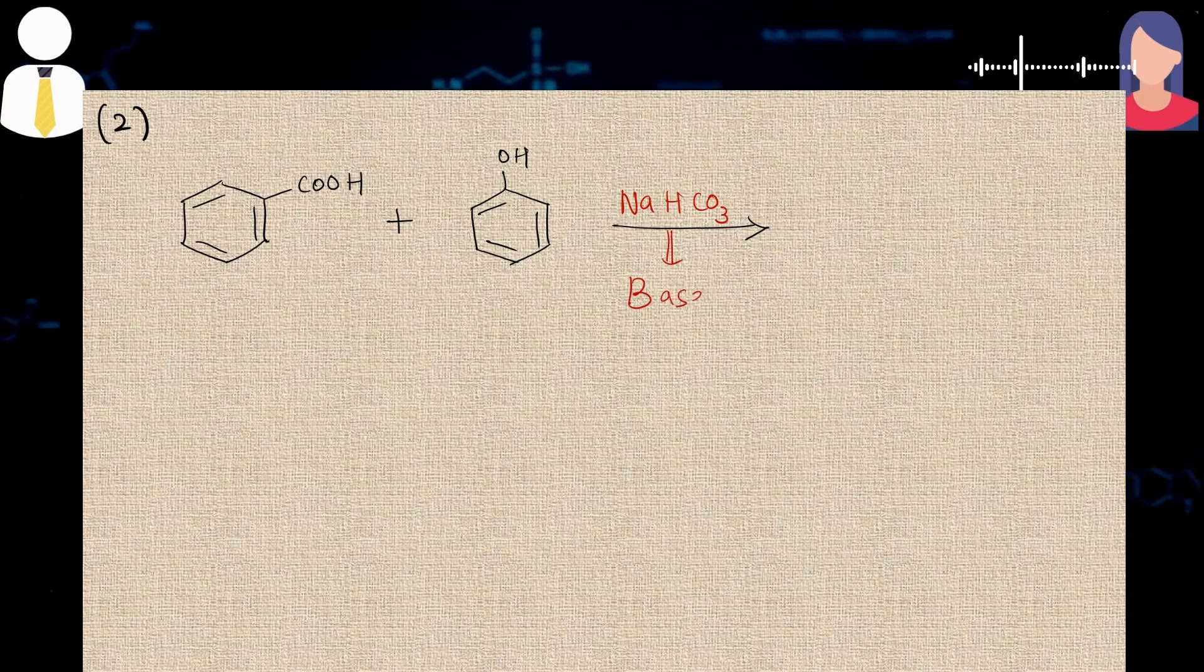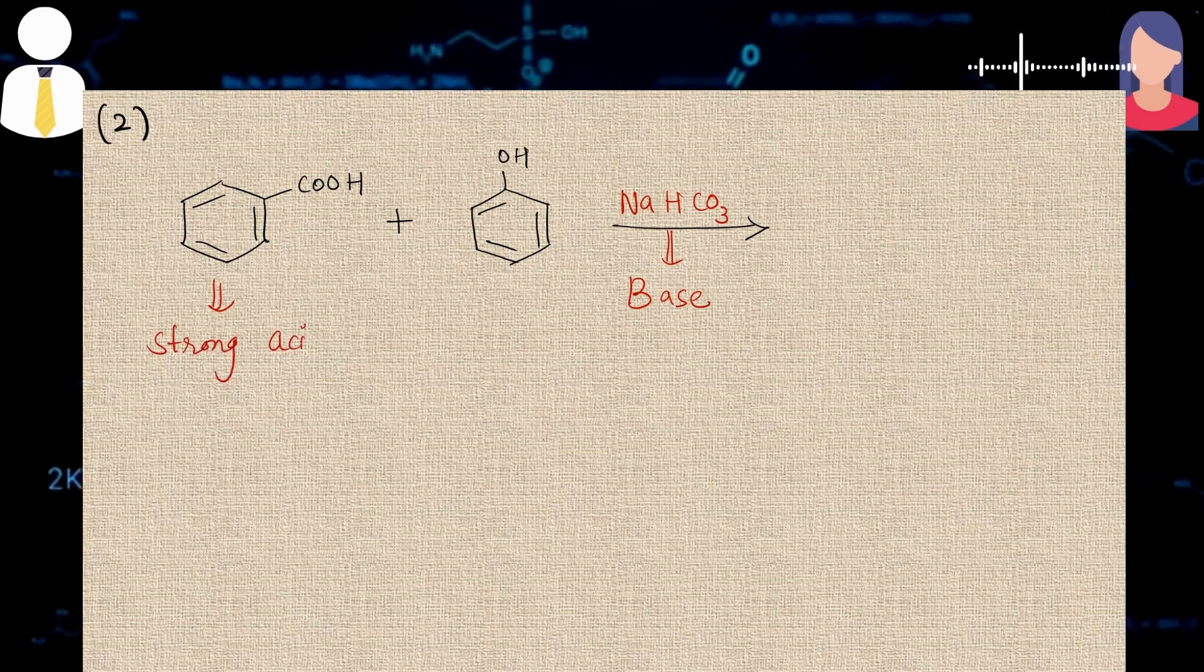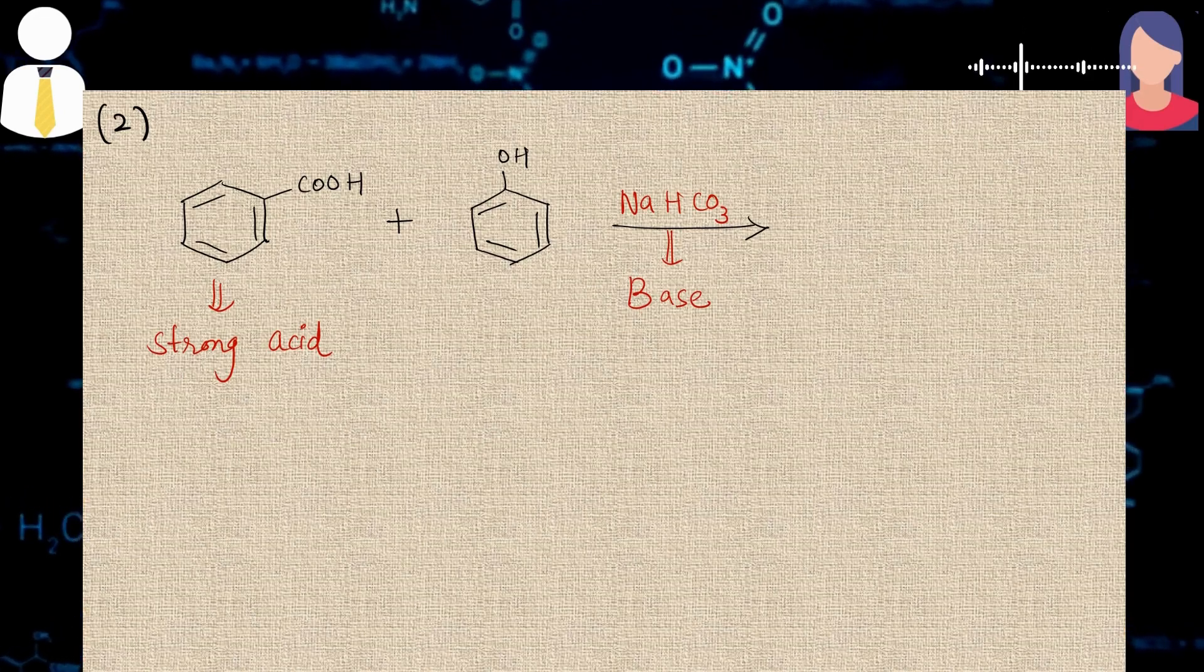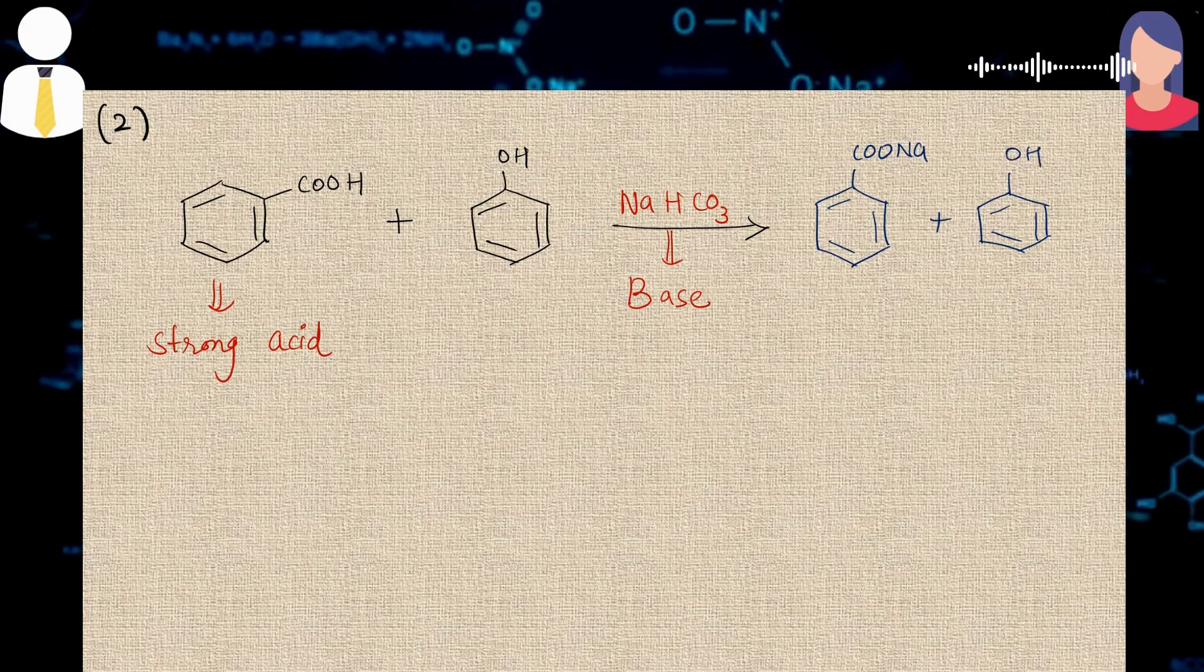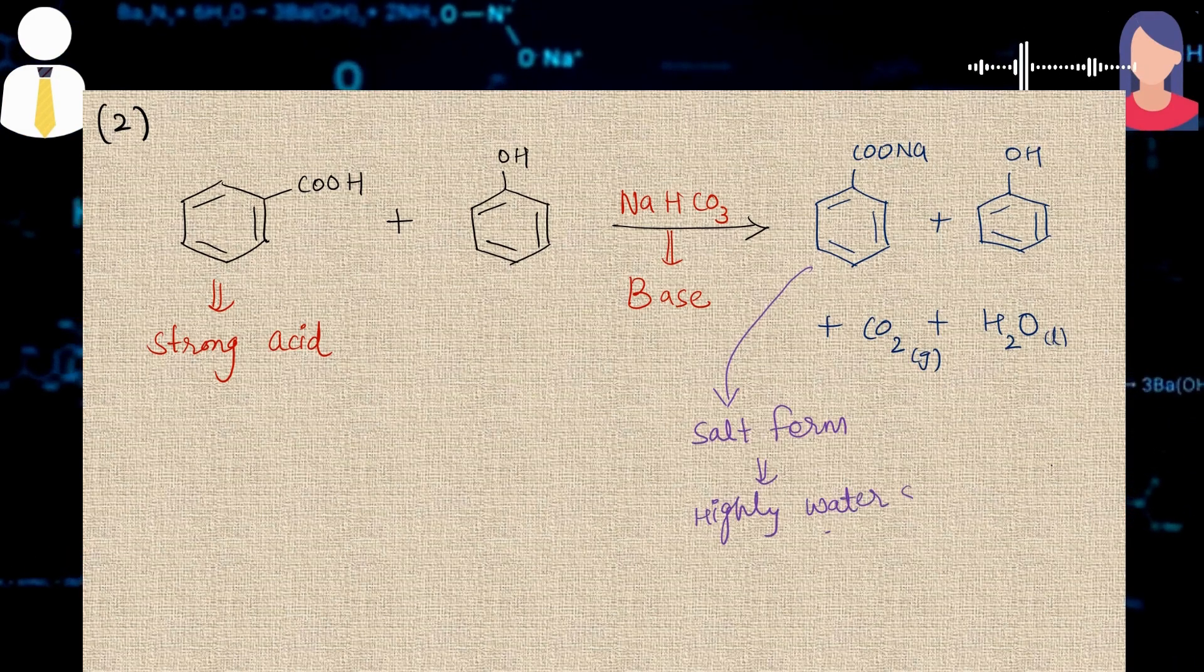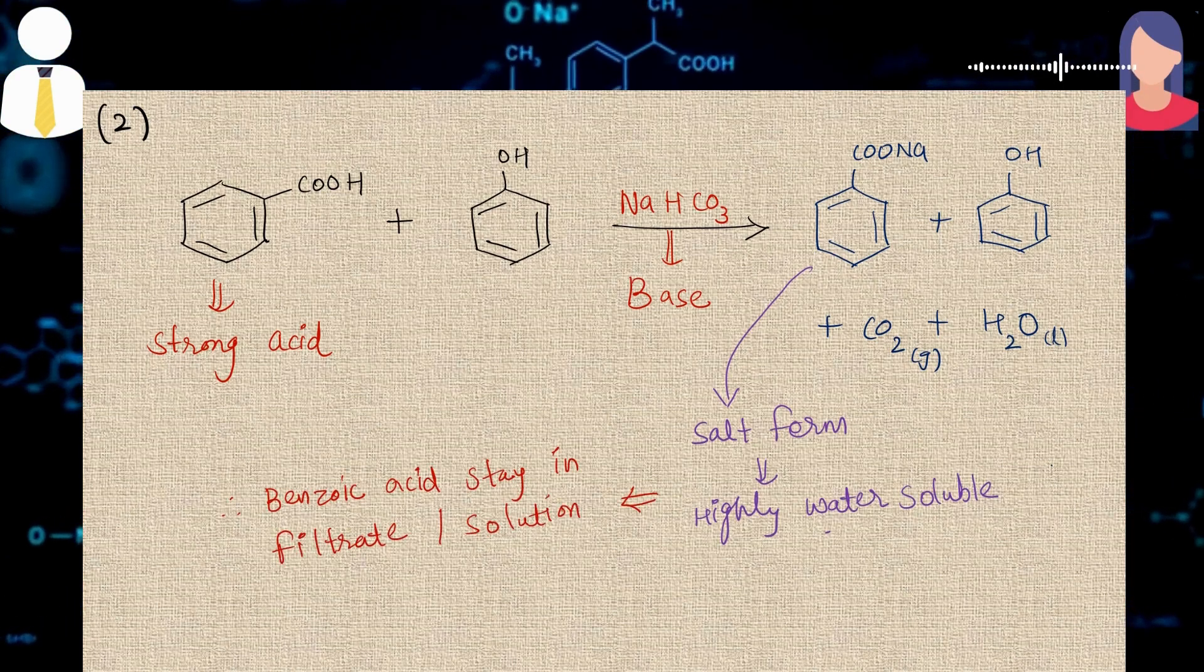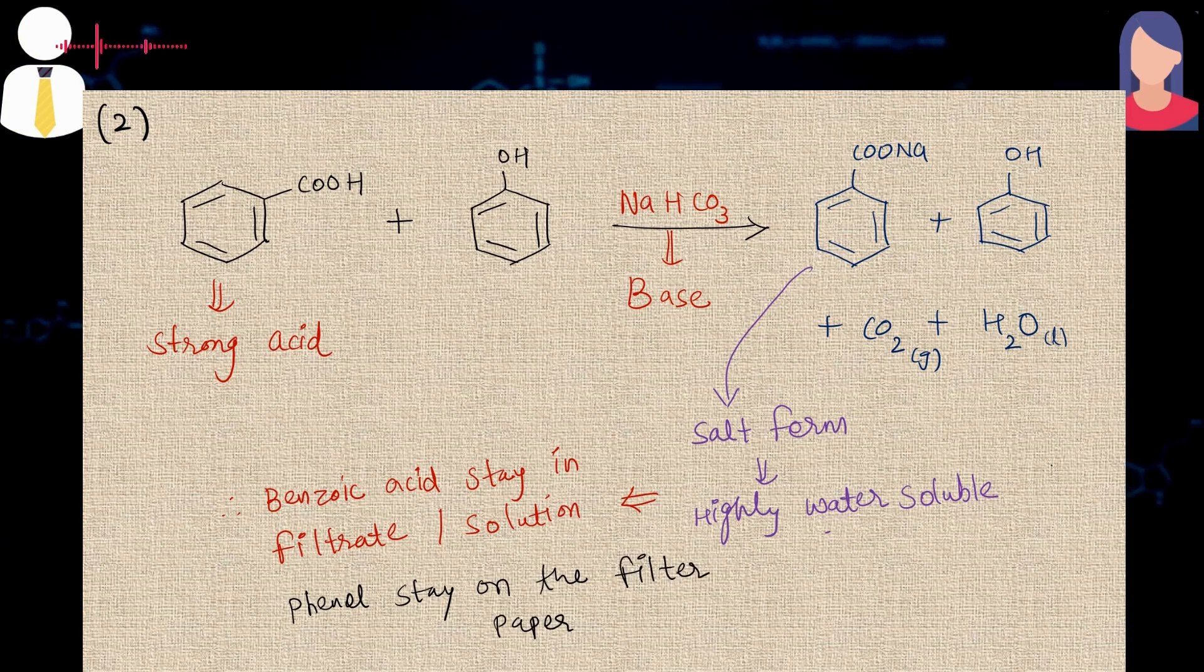So I answered that sodium bicarbonate is a base, and benzoic acid is a stronger acid than the phenol. Now base generally likes to react with a stronger acid, and only benzoic acid will react with sodium bicarbonate with the effervescence of CO2 gas. And at the end of the reaction, sodium benzoate is formed, which is highly water soluble, so it gets dissolved in the solution. And phenol will remain in the solid form. After that, by simple filtration, these two compounds get separated. Then you will find dissolved benzoic acid in the filtrate and on the filter paper phenol. Then he said okay, correct.